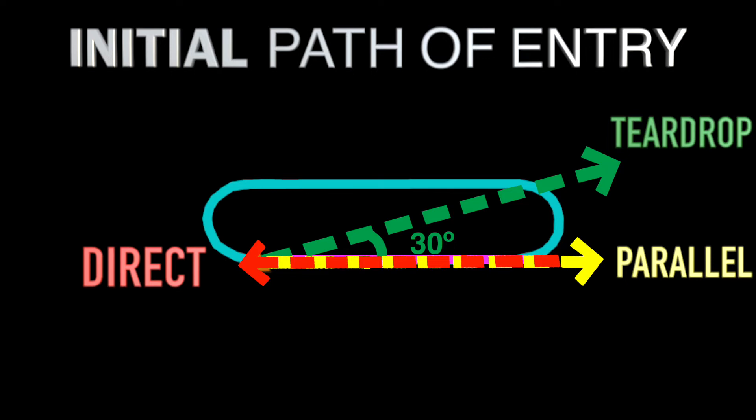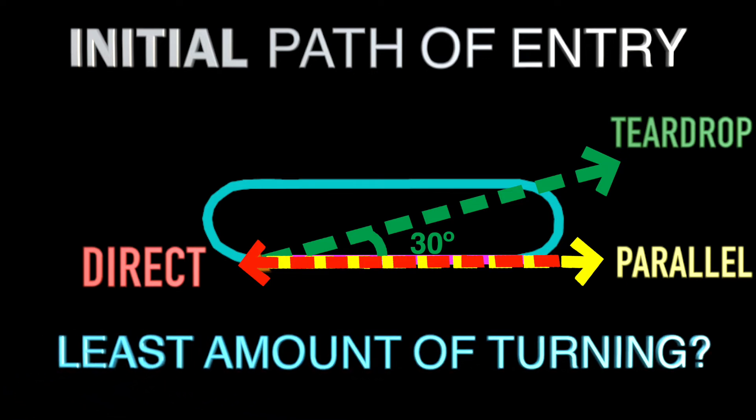In doing so, we can find which entry would require the least amount of turning to line up with their course. And that would be the entry to execute for the situation. Here are a few demonstrations with this concept.